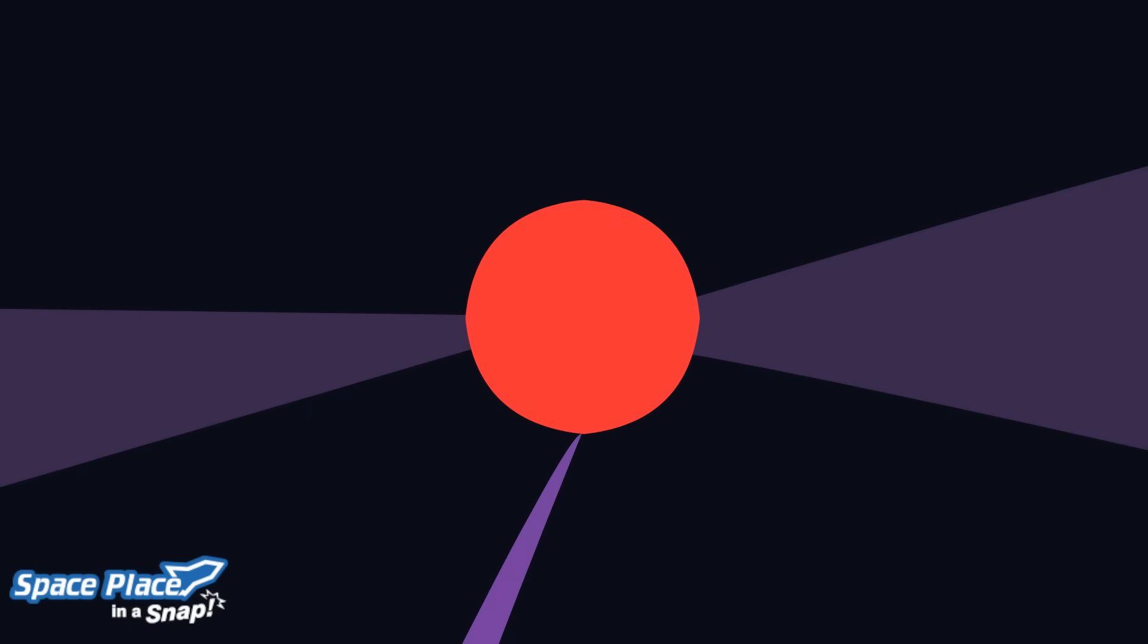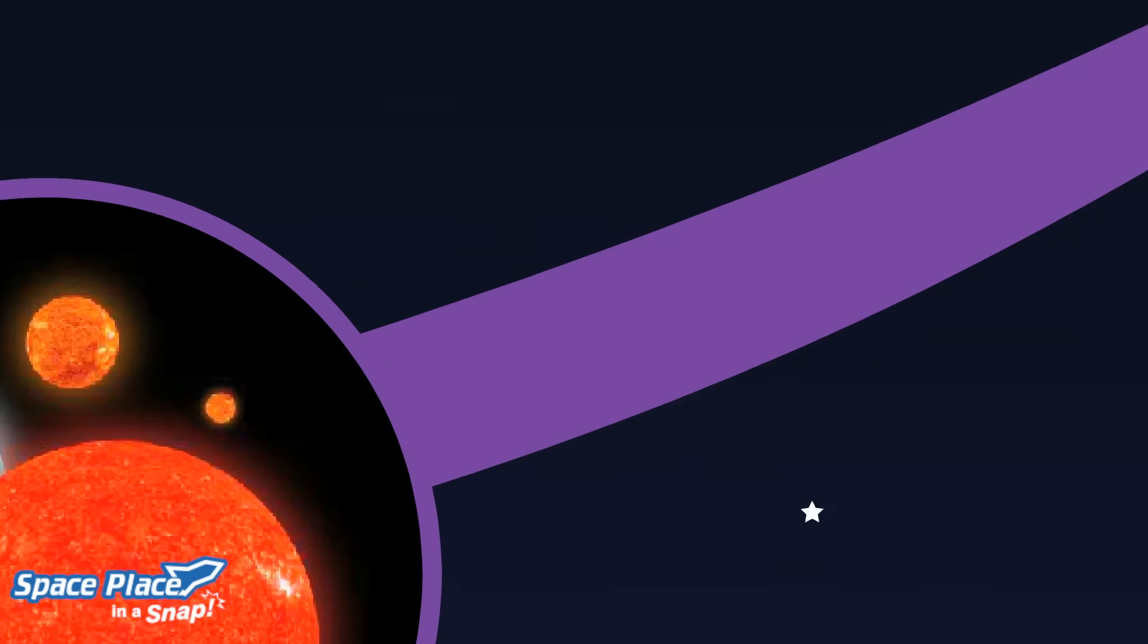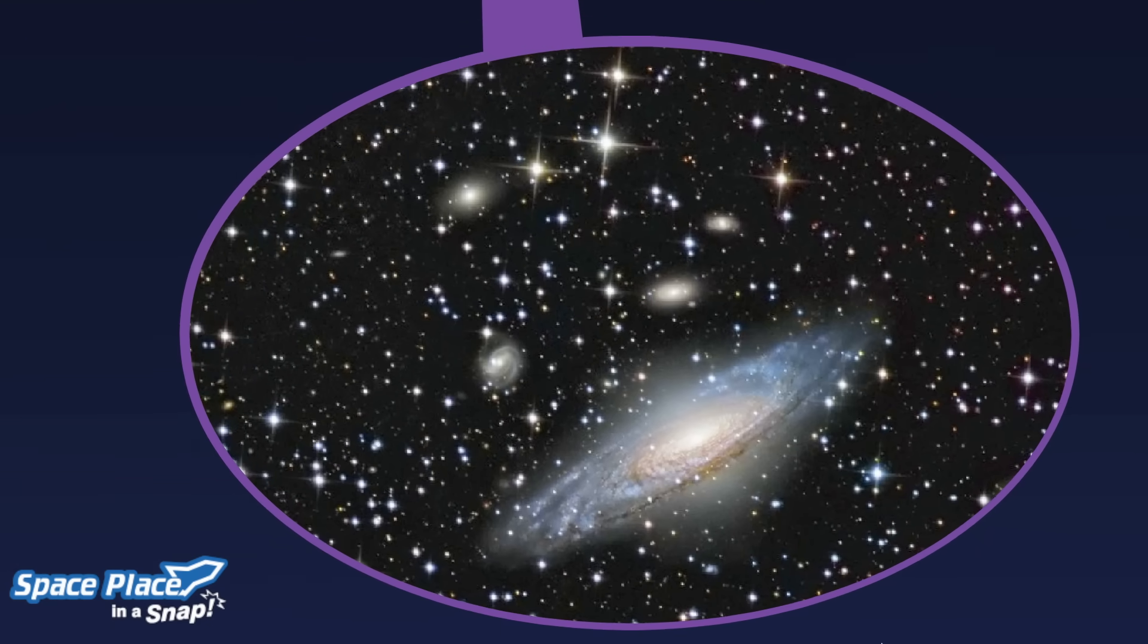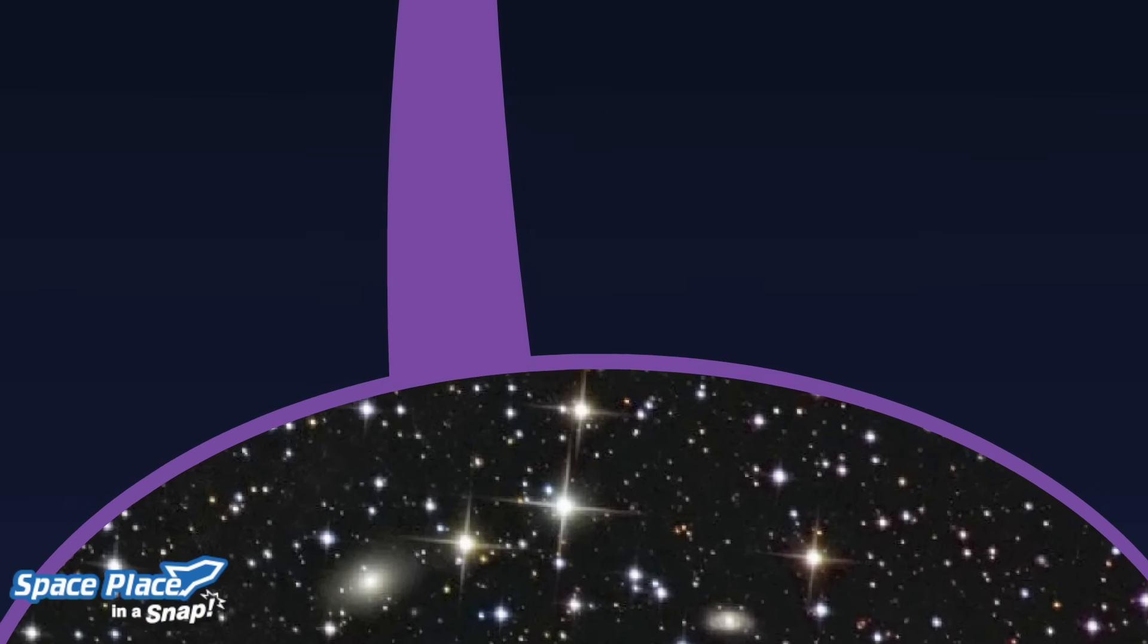Black holes can form in many ways, though, and large black holes can have tens to millions of times the mass of our sun trapped in a point smaller than the tip of a pin.